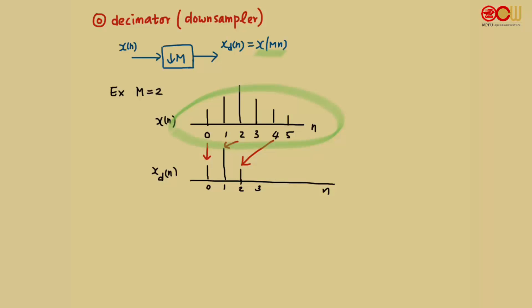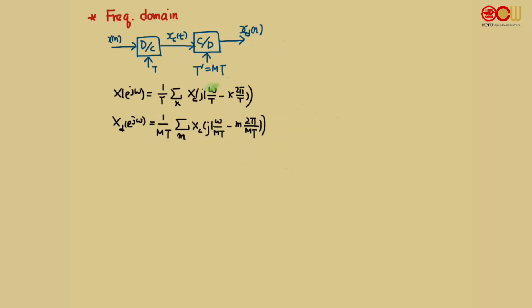Now let's go to the frequency domain and see what the decimator does there. To understand the relation in the frequency domain, we can think of x_d as follows: we first pass x[n] through a D-to-C converter and then resample using T' = MT. That's what gives us x_d.